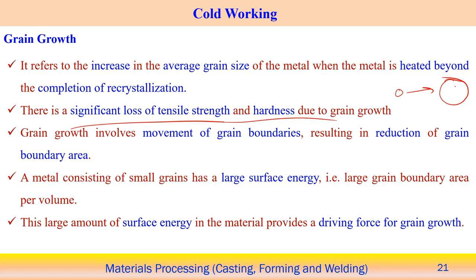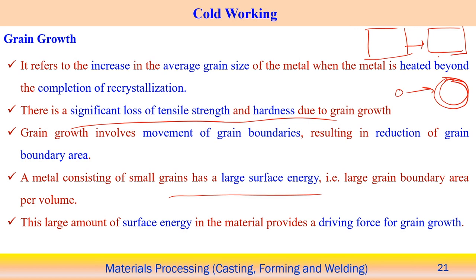From smaller grains to bigger grains, grain boundary movement occurs. A metal with small grains has a large surface energy and a large grain boundary area per unit volume. When filled with small grains, the total grain boundary area is much larger compared to when filled with larger grains. This large surface energy provides the driving force for grain growth through the curvature effect.